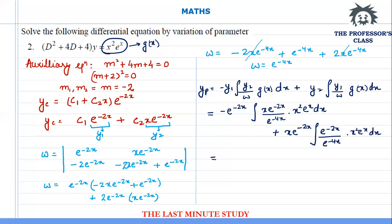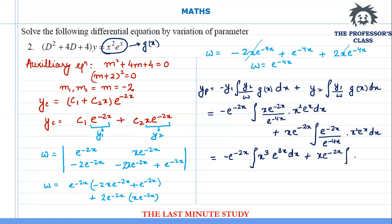Simplifying: for the first integral, combining exponents gives -2 + 4 + 1 = 3, so I get x³·e^(3x) dx. For the second integral, combining -2 + 4 + 1 = 3 similarly gives x²·e^(3x) dx. Now I need to integrate both these terms using integration by parts.